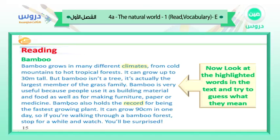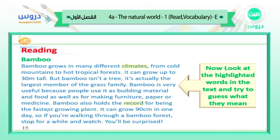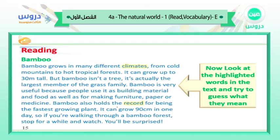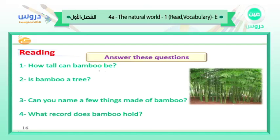Bamboo also holds the record for being the fastest growing plant. What does record mean? It's like holding the fastest — no one is faster than bamboo. If you're doing something and it's a record, it means no one else can do it like you — you are the fastest one, the greatest one. That's what we call a record.